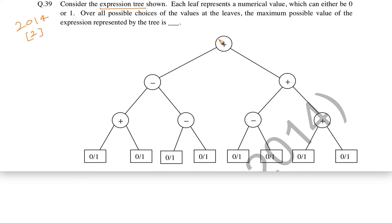Here we can see that the top operator is plus. So whatever value we are going to get from the left subtree and the right subtree, we have to maximize that. Only then we are going to add up to get the overall maximum possible value. So we have to maximize this left subtree and we have to maximize this right subtree.